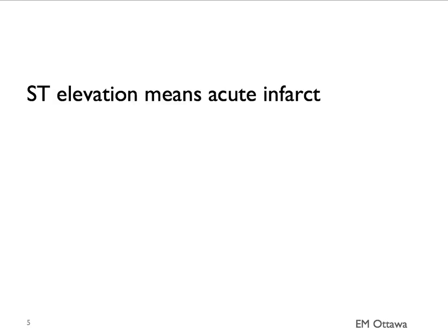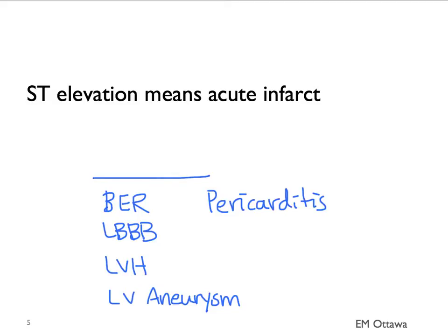In the patient that we're worried about acute coronary syndrome, ST elevation means an acute infarct. You can also get ST elevation in patients without an infarct — including benign early repolarization, which should not be giving the patient chest pain, a left bundle branch block, which you may or may not be able to find out if it's new or old, LVH or LV aneurysm, and pericarditis, which will give the patient chest pain.